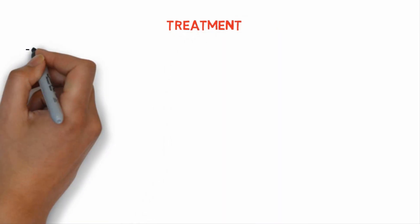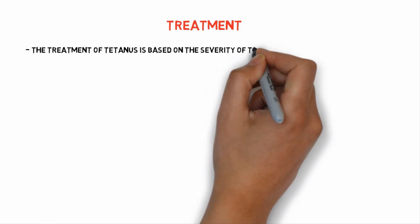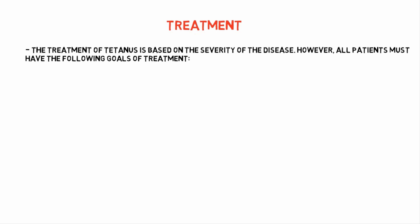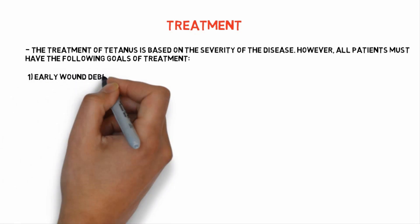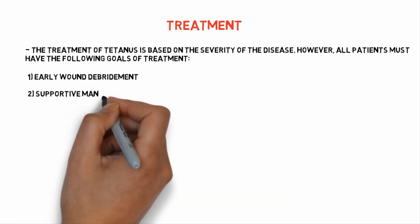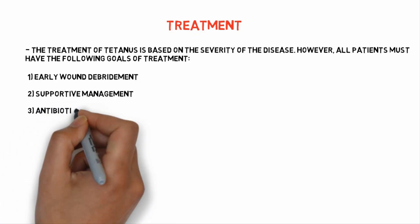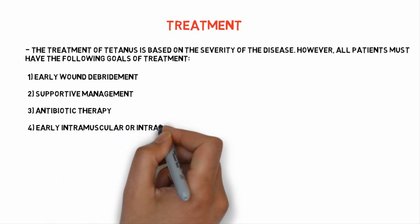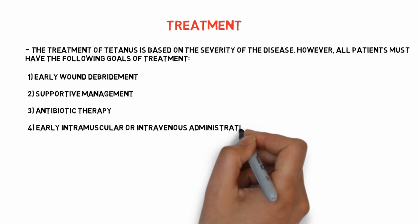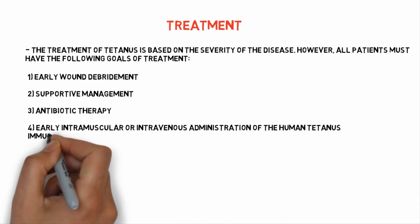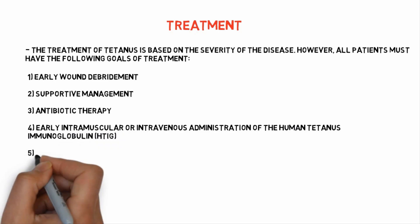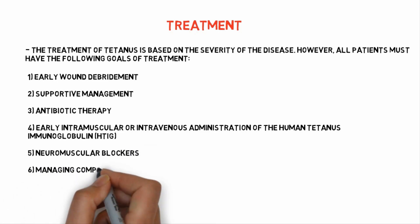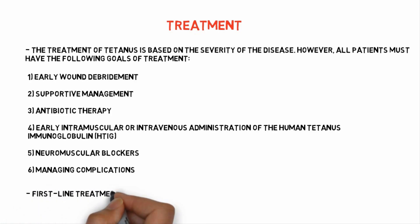Coming to the treatment of tetanus, treatment is based on severity of the disease. However, all patients must have the following goals of treatment: first, early wound debridement; second, supportive management; third, antibiotic therapy; fourth, early intramuscular or intravenous administration of human tetanus immunoglobulins, also known as HTIG; fifth, neuromuscular blockers; and finally, managing complications of tetanus.